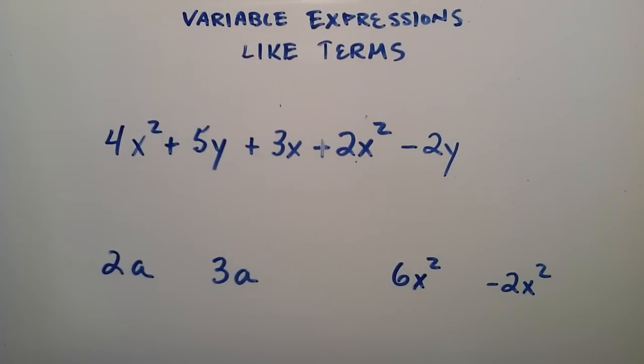So why do we want to know that we have like terms? Well, if we have like terms, we can add and subtract them together just like we would regular numbers. So if you have 2a and you want to add 3a to it, because these are like terms, you simply look at the coefficients and add the coefficients together. So the coefficient 2 plus 3 is equal to 5, and then we write down the a.